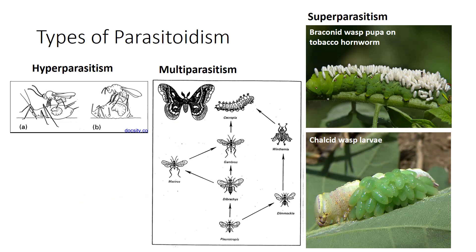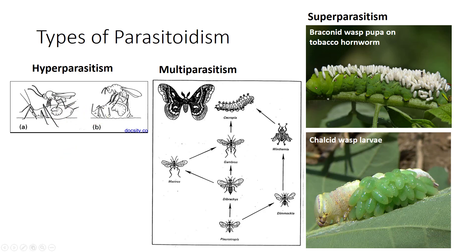Most parasitoids are host-discriminate and will not oviposit into a host already harboring a parasitoid. Some practice superparasitism, laying their eggs in already-parasitized hosts where all eggs are from the same species. In multiparasitism, the host receives eggs from more than one species of parasitoid. Hyperparasitism involves a parasitoid parasitizing the larvae of another parasitoid — some species are obligate, developing only within primary parasitoids, while others are facultative hyperparasitoids that may also develop as primary parasitoids. Most parasitoids are restricted to a single species of host, analogous to monophagous phytophages.